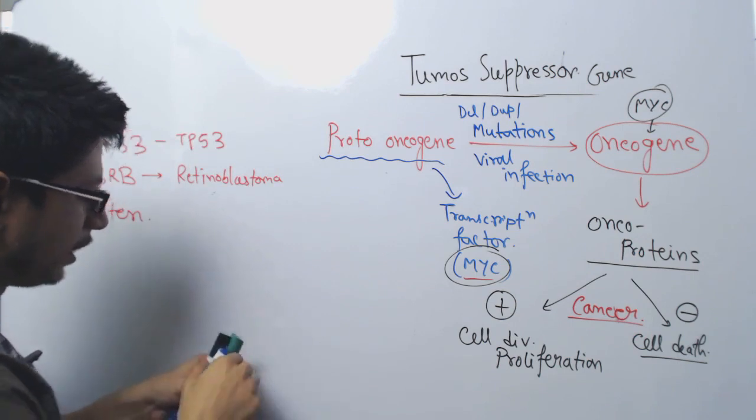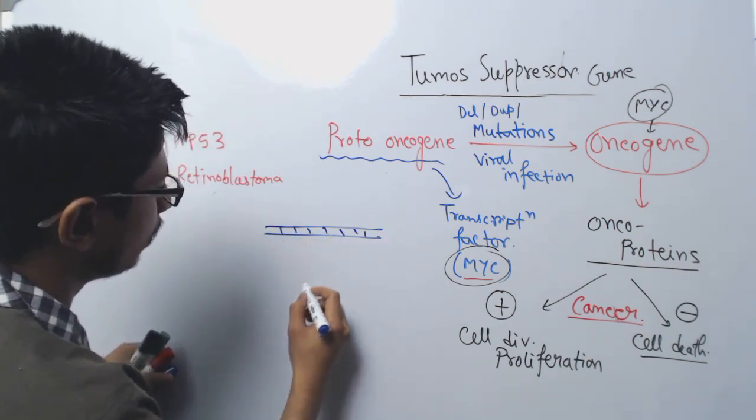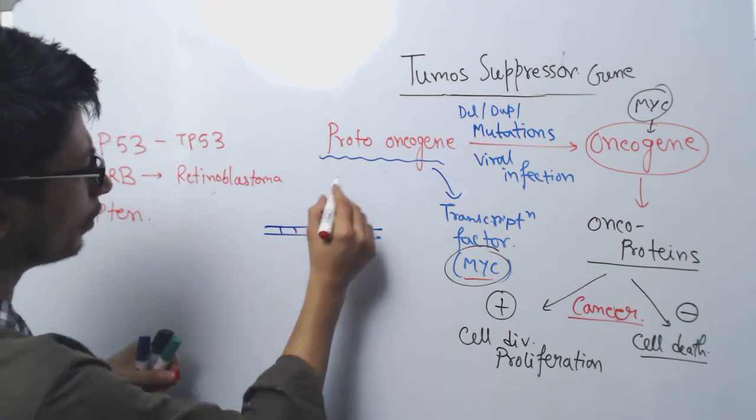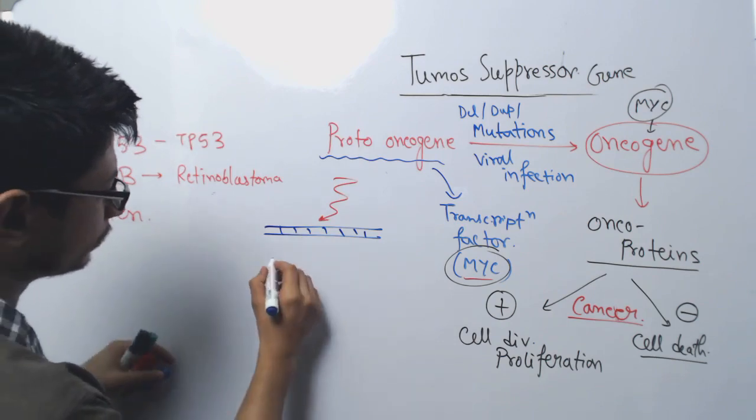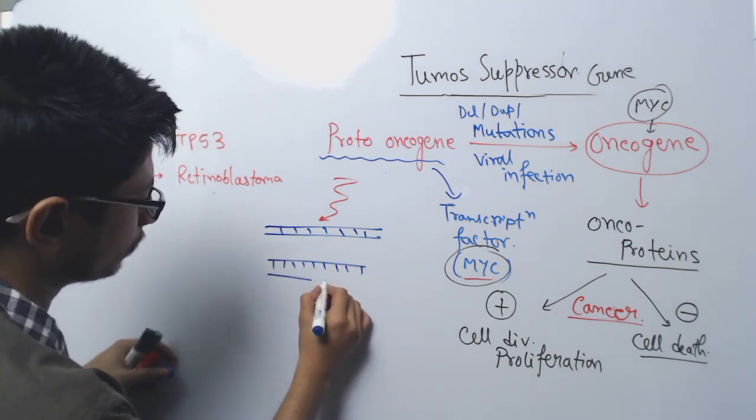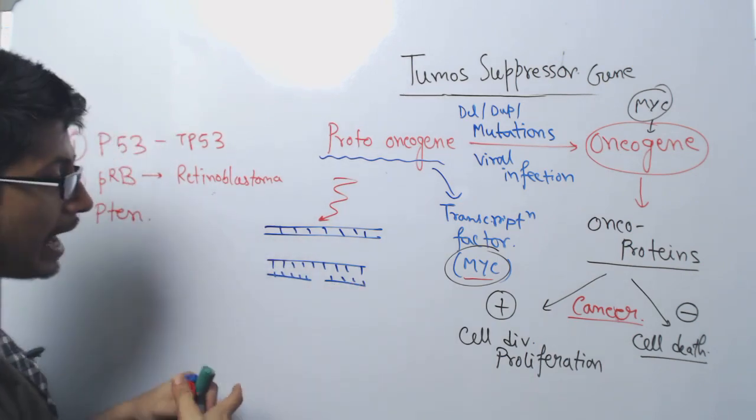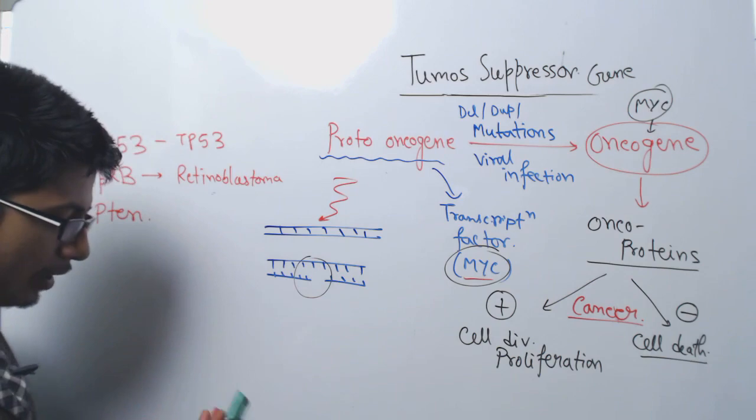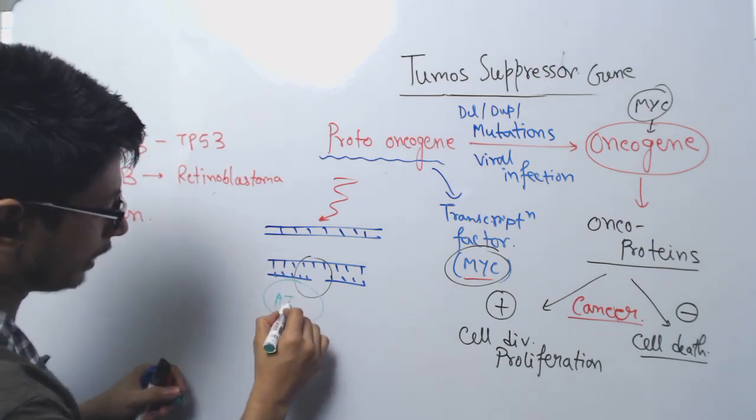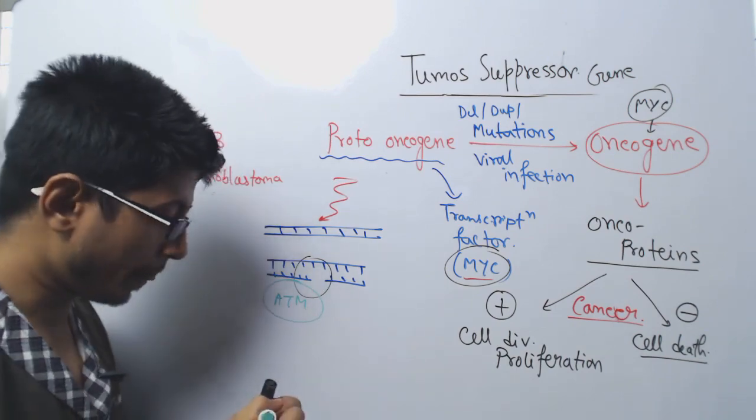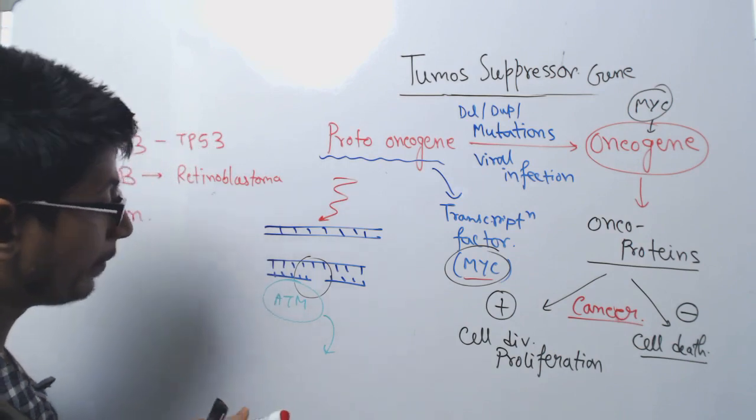Let's say here, this is normal DNA. Due to any sort of problems—radiation or something—DNA damage occurs. For example, this is the DNA damage. As there is DNA damage formed, there will be some proteins. As I told you, ATM is a DNA damage response protein. It will signal the P53 to become activated.